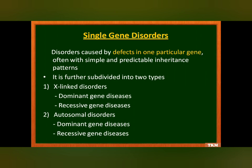Single gene disorders are further subdivided into two types: X-linked disorders and autosomal disorders. Chromosomes 1 to 22 are the non-sex-determining chromosomes, called autosomal chromosomes. The 23rd pair is the sex-determining chromosomes. Any disorder linked to the sex-determining chromosome is called an X-linked disorder, whereas any disorder linked to chromosomes 1 to 22 is called an autosomal disorder.